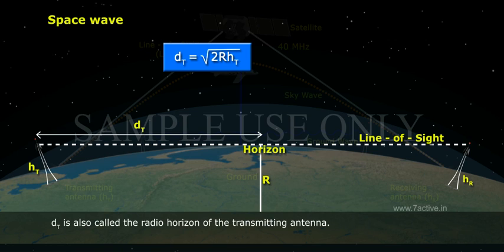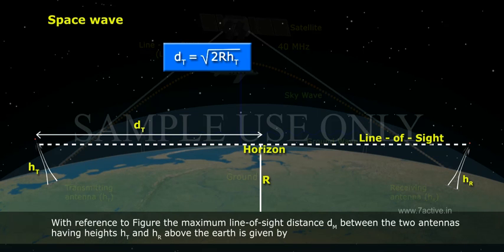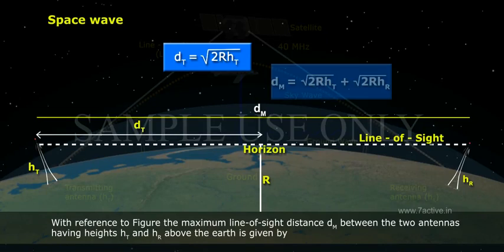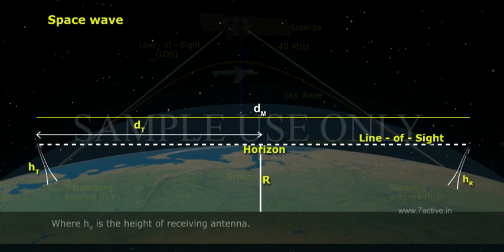dt is also called the radio horizon of the transmitting antenna. With reference to figure, the maximum line-of-sight distance dm between the two antennas having heights ht and hr above the earth is given by dm equals root 2Rht plus root 2Rhr, where hr is the height of receiving antenna.